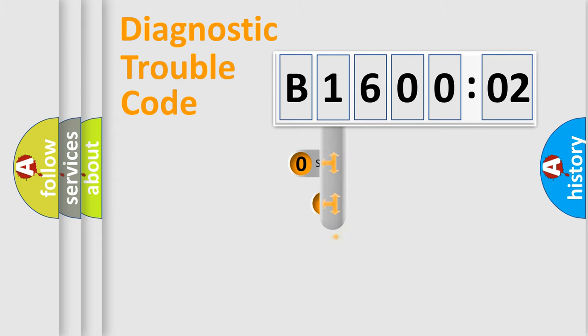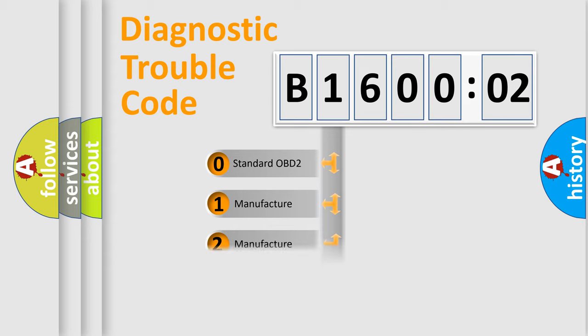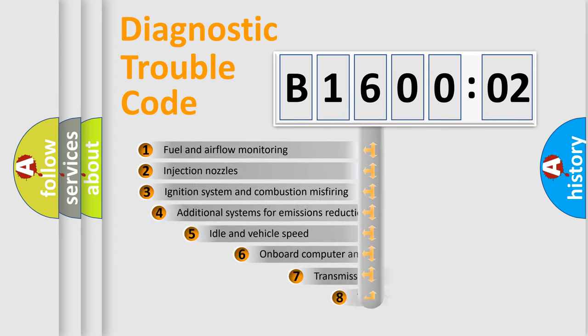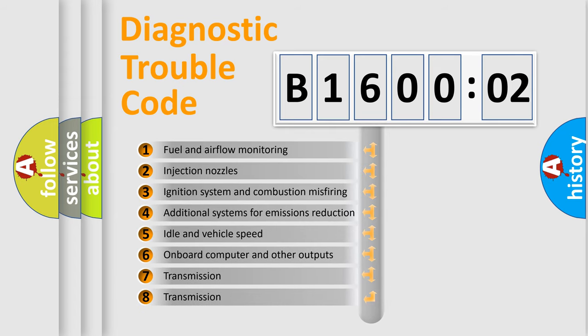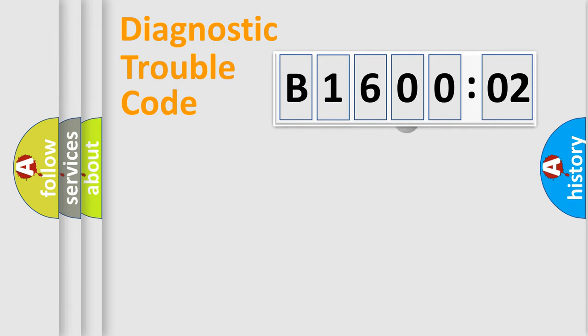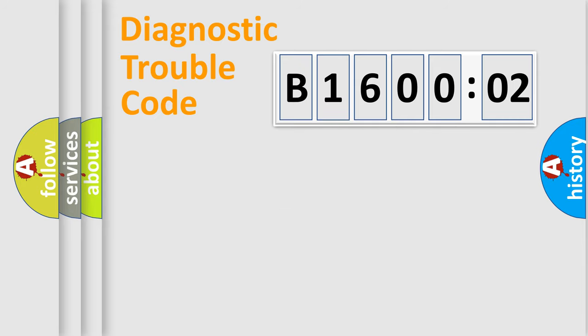This distribution is defined in the first character of the code. If the second character is expressed as zero, it is a standardized error. In the case of numbers 1, 2, or 3, it is a more specific expression of a car-specific error. The third character specifies a subset of errors. This distribution is valid only for the standardized DTC code. Only the last two characters define the specific fault of the group.